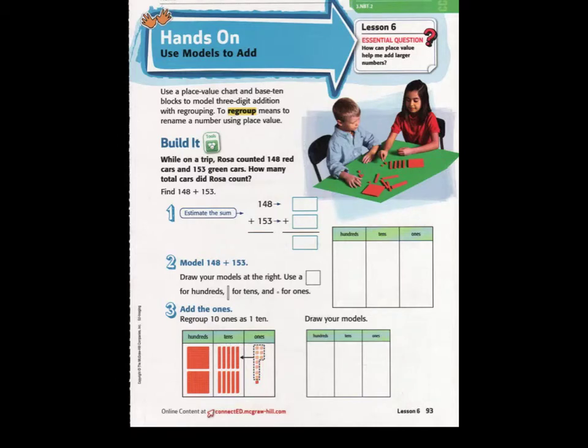Hello, boys and girls. For today's lesson, you need to be on page 93 of your My Math book. It is Chapter 2, Lesson 6, where the essential question is: How can place value help me add larger numbers?